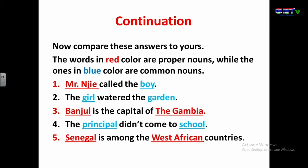Now compare these answers to the class exercise on common and proper nouns. The words in red are proper nouns, while the ones in blue are common nouns. 'Mr. Ndiaye called the boy' — proper noun: Mr. Ndiaye; common noun: boy. 'The girl watered the garden' — two common nouns: girl and garden. 'Banjul is the capital of the Gambia' — two proper nouns: Banjul and the Gambia. 'The principal didn't come to school' — two common nouns: principal and school. 'Senegal is among the West African countries' — proper nouns: Senegal and West Africa.